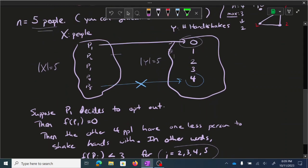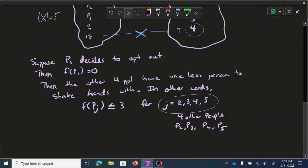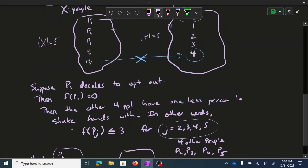So how does the pigeonhole principle come into play here, then? Well, we have a set of four people left. P2, P3, P4, P5. Four people. And the number of handshakes that they can try to go grab are just these three left, one, two, and three.